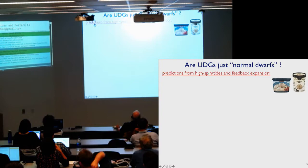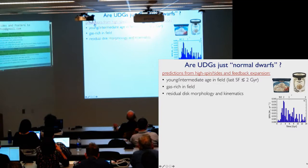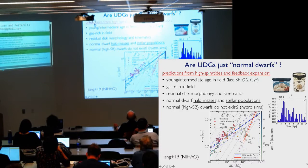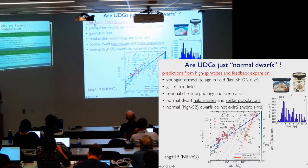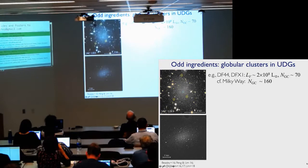So these are all presenting UDGs as normal dwarfs. These couple scenarios I mentioned. And what are some predictions there from these scenarios? One is that UDGs, unless they're in a cluster, should always be young or intermediate age. These are dwarfs. They shouldn't be able to shut off their star formation, and they should still have gas hanging around. They should have some sort of disk, residual morphologies or kinematics. Their halo masses should be like normal dwarfs, stellar populations like normal dwarfs. Okay, and these are all things we can test. And also this is kind of an odd prediction of some of the models, is that you get lots and lots of UDGs. And instead of the UDGs being the tail of a normal dwarf distribution, it's the other way around.